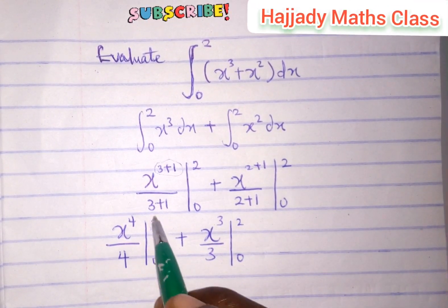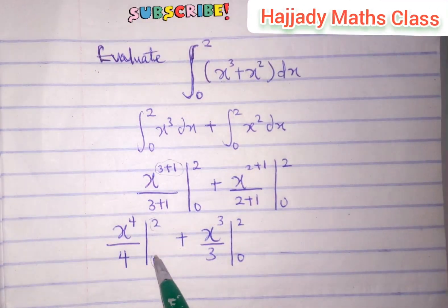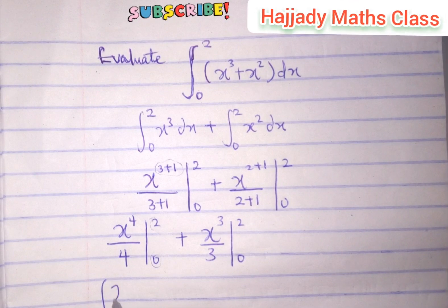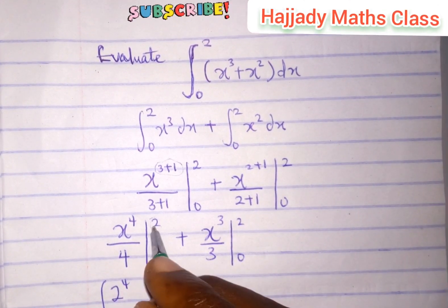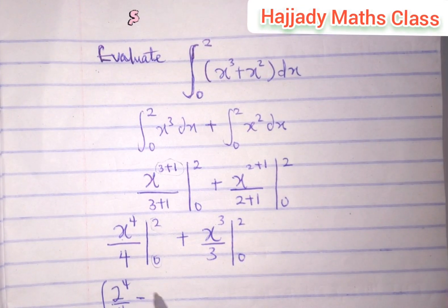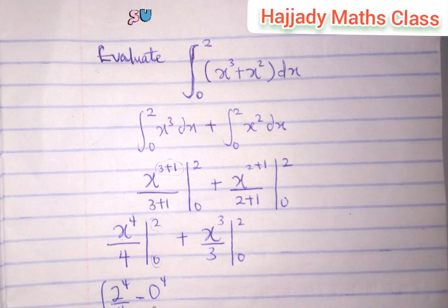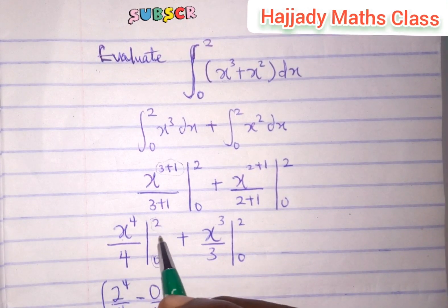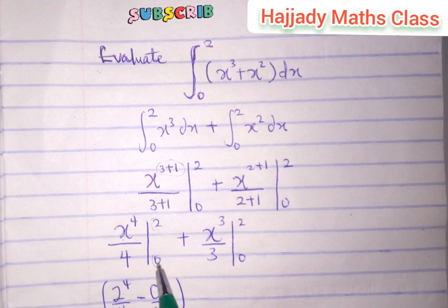So now, we are substituting this and subtracting it from this when we substitute. So here we have 2 raised to the power 4. So we substitute the value of x with 2, all over 4, minus 0 raised to the power 4, all over 4.